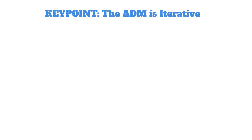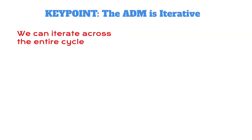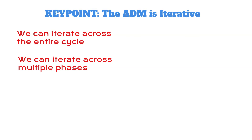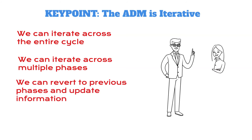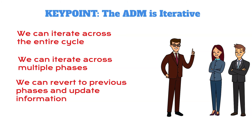The key point in all this is that the ADM is in fact iterated. We can iterate across the entire cycle, doing it over and over again to arrive at perfection. We can iterate across multiple phases, like we've seen in the formally defined four iterations. We can also decide to revert to previous phases and update information depending on where we are in the design process.